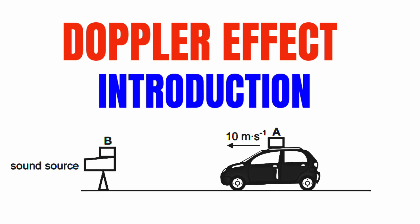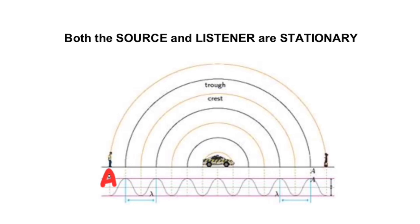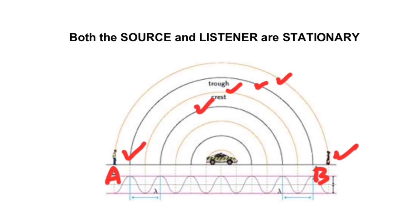Both the source and the listener are stationary. You are standing at point A and your friend is standing at point B. In the middle, between the two of you at point A and B, there is a car that is playing music. You standing at point A and the friend standing at point B will experience the music in the very same way. The frequency of sound emitted by the car is the very same frequency that will be observed by both of you, because the distance between the crests and the troughs remains the same. Both the source and the listener are stationary, so the frequency is not changing.